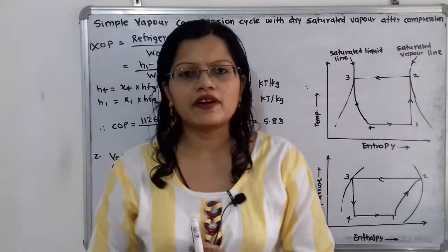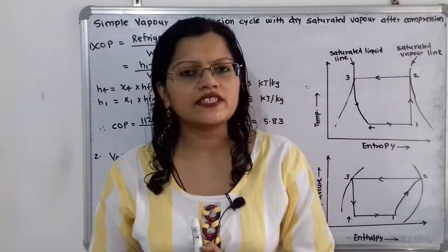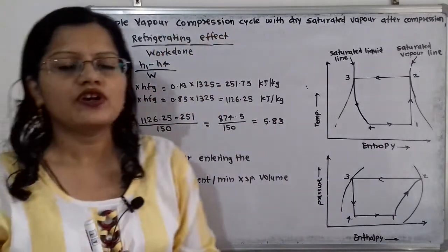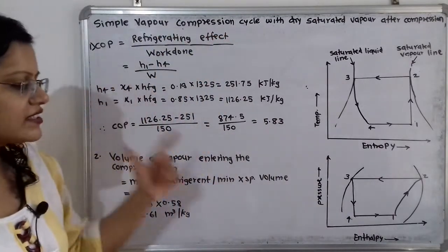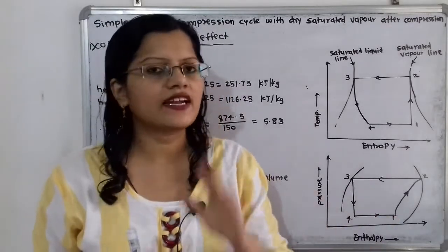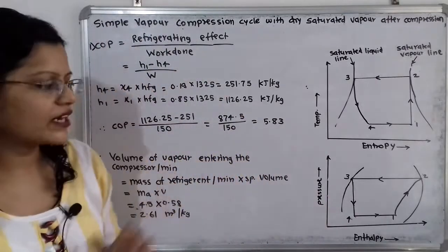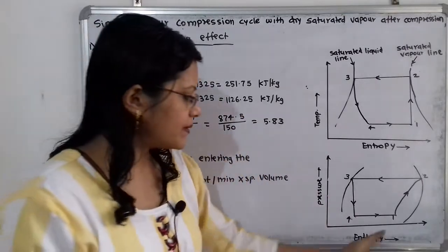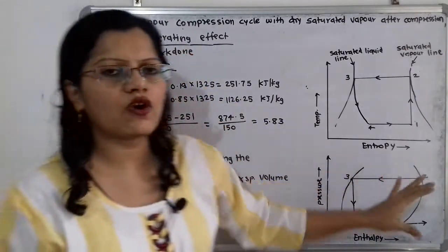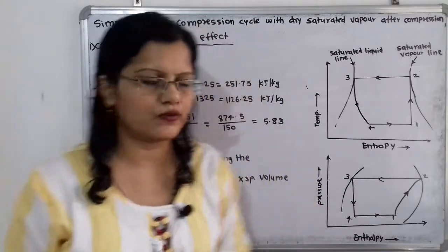Now we will calculate the coefficient of performance. The formula is refrigerating effect divided by work done. The refrigerating effect occurs in the evaporation process 4 to 1, calculated as the change in enthalpy h1 minus h4. The work done during compression is given, so we will directly use that value.